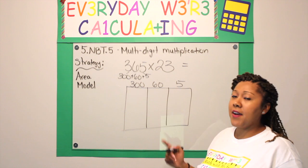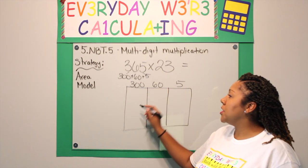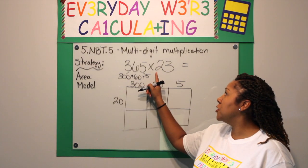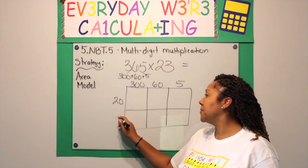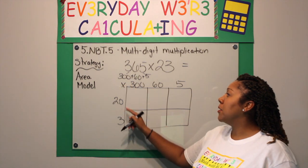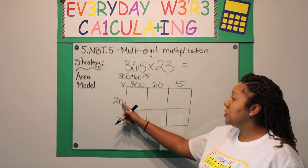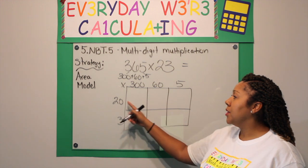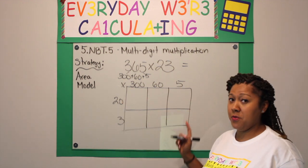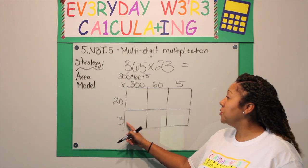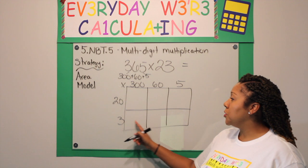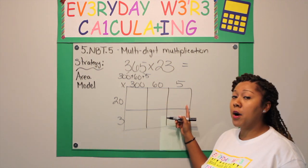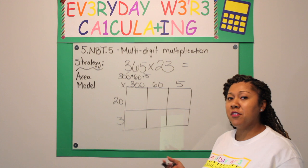You are going to do the same thing for the second factor, which is 23. This is a 2-digit number so I am only going to split my rows into 2. So this is 20, because the 2 is in the tens place, plus 3 ones. What you are doing is multiplying each column by each row. I am going to do row 1 times column 1, row 1 times column 2, and row 1 times column 3. Then row 2 times column 1, row 2 times column 2, and row 2 times column 3. These are going to be called partial products because I am multiplying and I do not have the full answer yet.